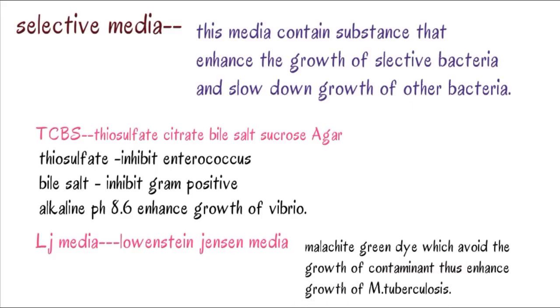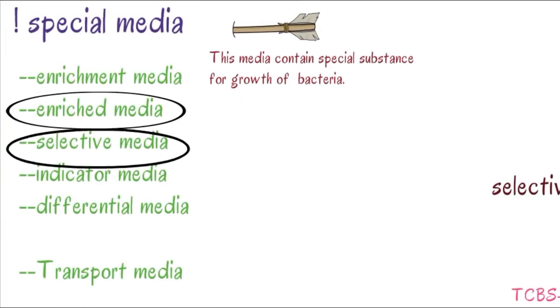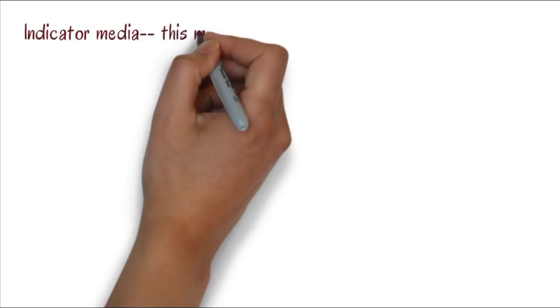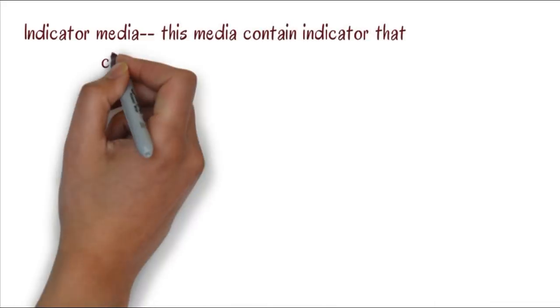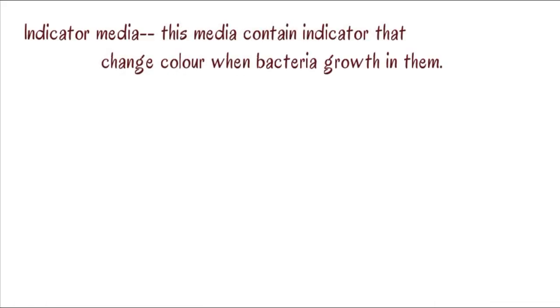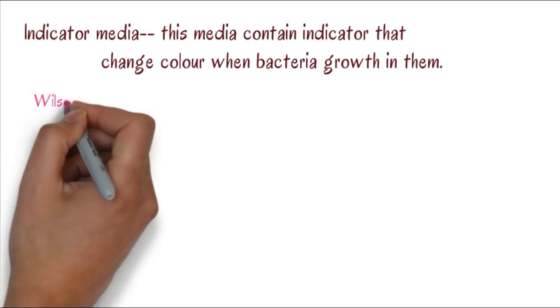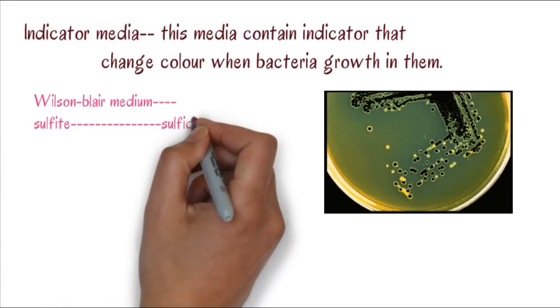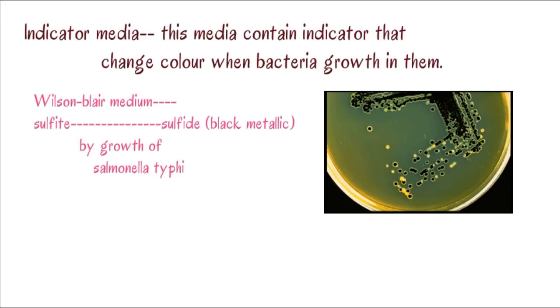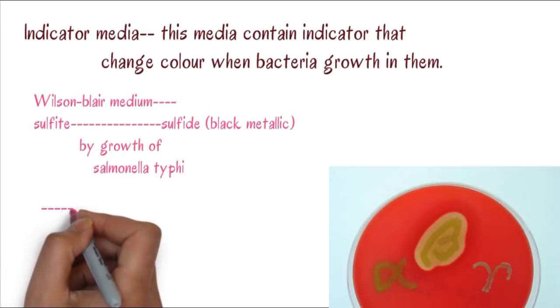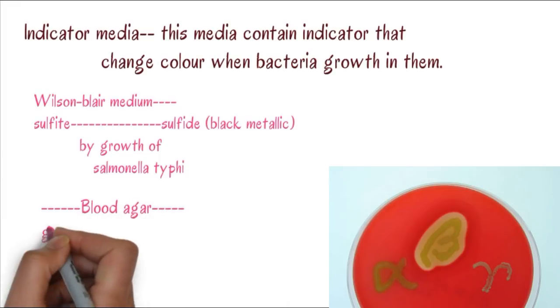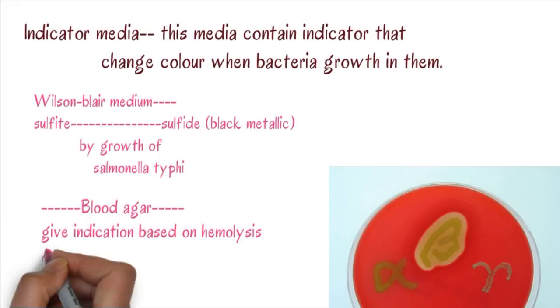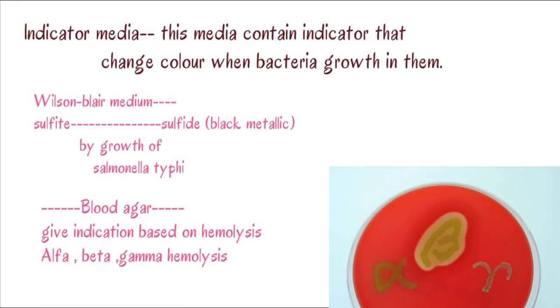Indicator media contains some indicator that changes color when bacteria grow in it. Examples: Wilson-Blair media in which sulfite changes into sulfide, producing a black metallic sheen by the growth of Salmonella typhi. Another is based on blood agar, which shows indication of hemolysis - alpha, beta, or gamma hemolysis by Streptococcus species.